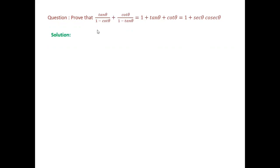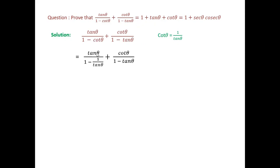The solution starts with: tan θ upon (1 minus cot θ) plus cot θ upon (1 minus tan θ). We know cot θ is 1 upon tan θ, so let us substitute that. It becomes tan θ upon (1 minus 1 upon tan θ) plus cot θ upon (1 minus tan θ).